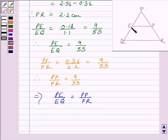Since PE upon EQ is equal to PF upon FR, therefore EF is parallel to QR by converse of basic proportionality theorem.